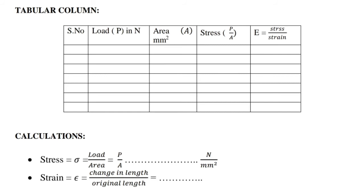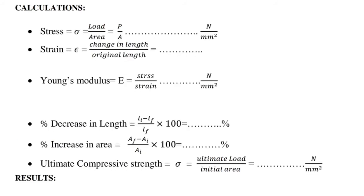Calculations: Stress σ = Load / Area = P / A, in N/mm². Strain = Change in length / Original length. Young's modulus E = Stress / Strain, in N/mm².